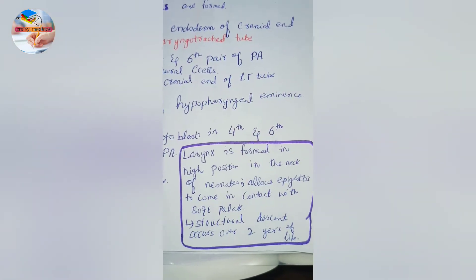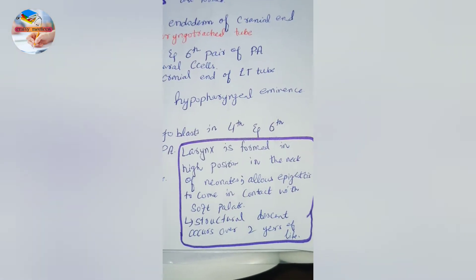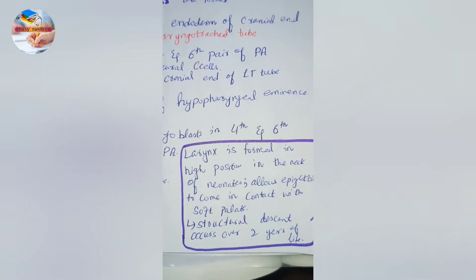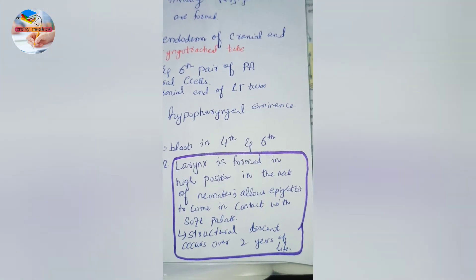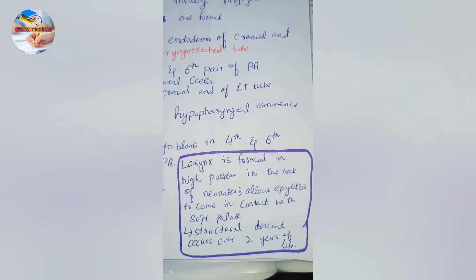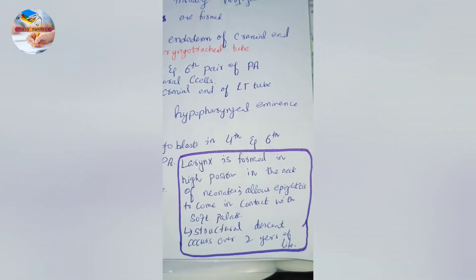The larynx is formed in a high position in the neck of neonates, which allows the epiglottis to come into contact with the soft palate. The structural descent of the larynx occurs over the first two years of life.